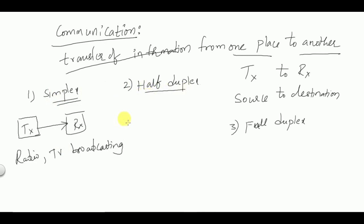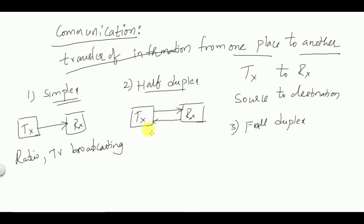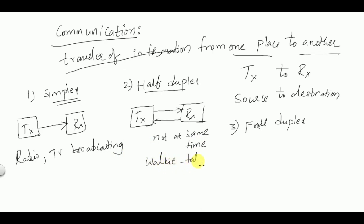In half duplex communication, there is transfer of information from transmitter to the receiver, and also transmission from receiver to the transmitter, but not at the same time. For example, walkie-talkie: first we receive information from transmitter to receiver, and then we can send information from receiver to transmitter.